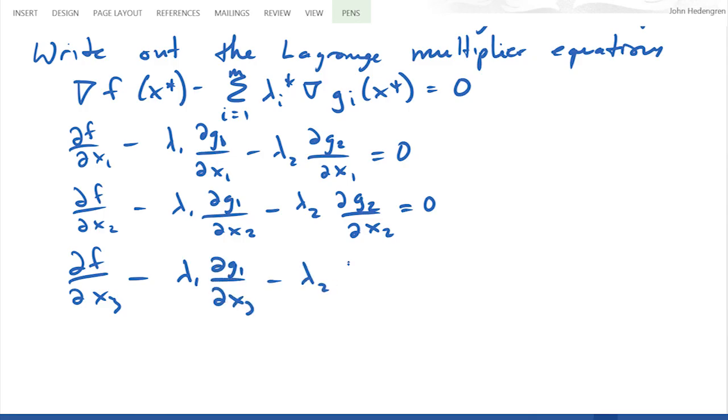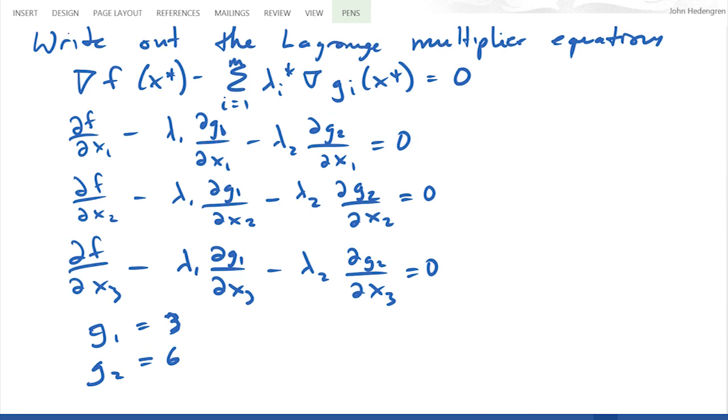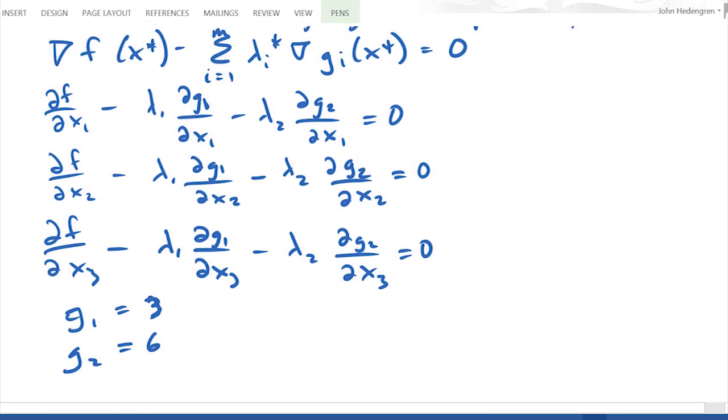And so this is just with respect to x3. Okay, so I differentiate both my objective function and my inequality constraints with respect to x3, x2, and x1. And then I assume that g1 and g2 equal the right-hand side, or the b values.